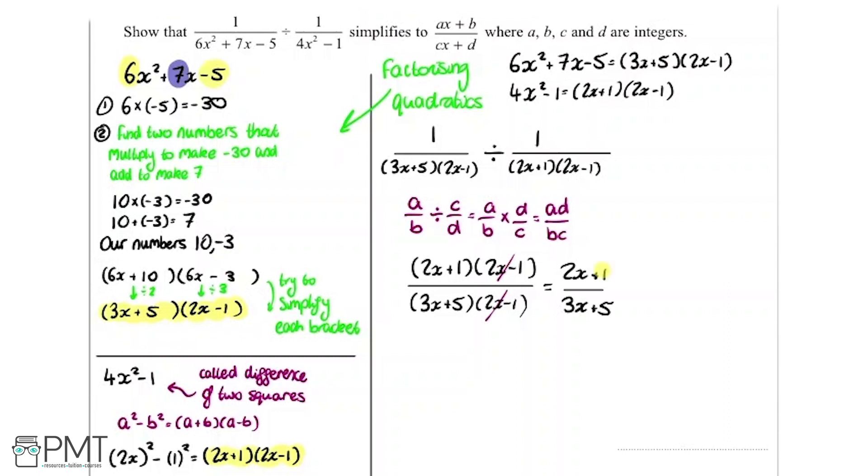And that is the answer to this question. We got it in the form ax plus b over cx plus d. So a is 2, b is 1, c is 3 and d is 5.